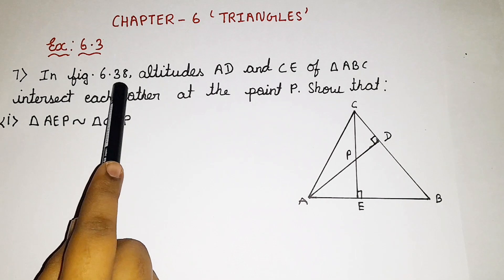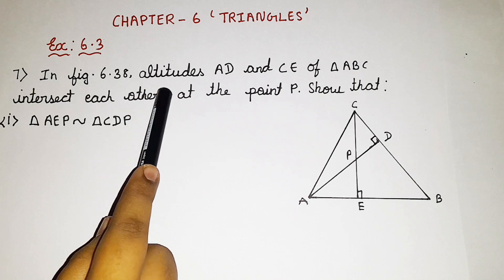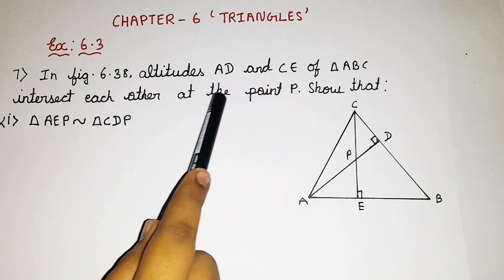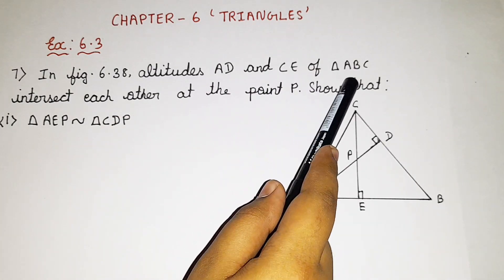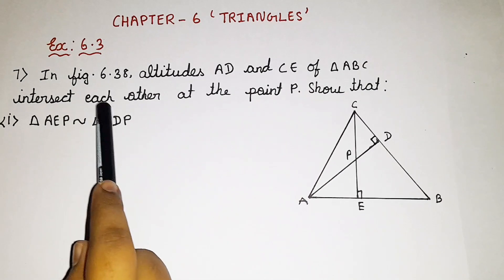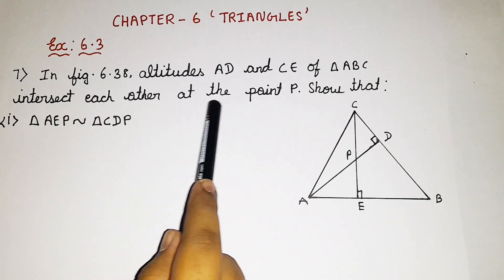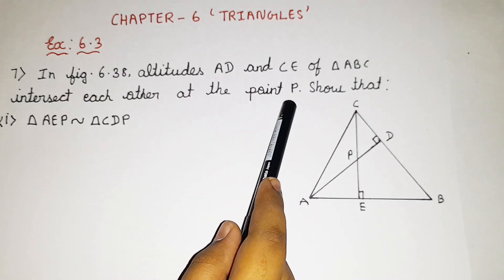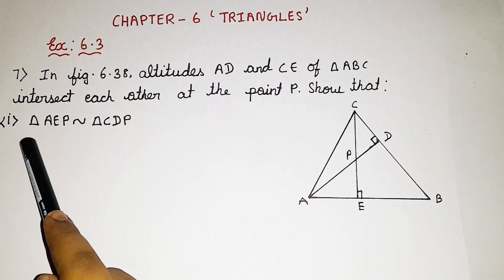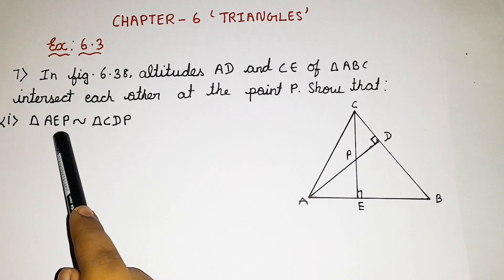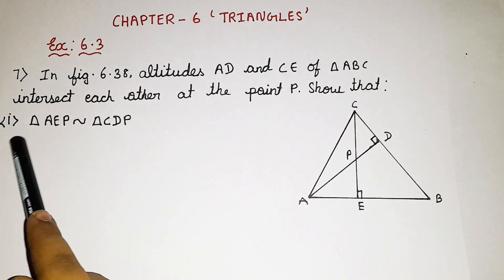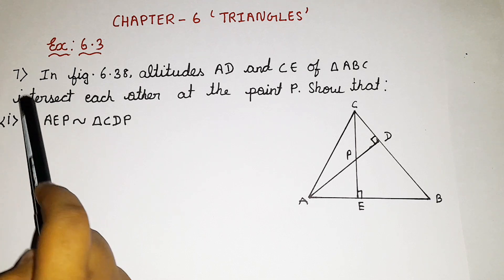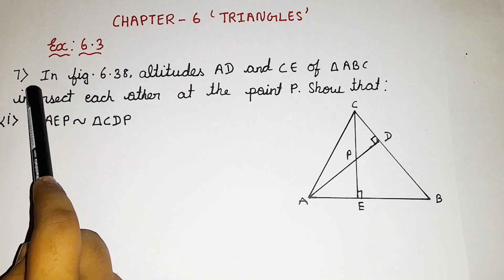So now let us read the question. In figure 6.38, altitudes AD and CE of triangle ABC intersect each other at the point P. Show that triangle AEP is similar to triangle CDP. This is the first subdivision of this particular 7th question.